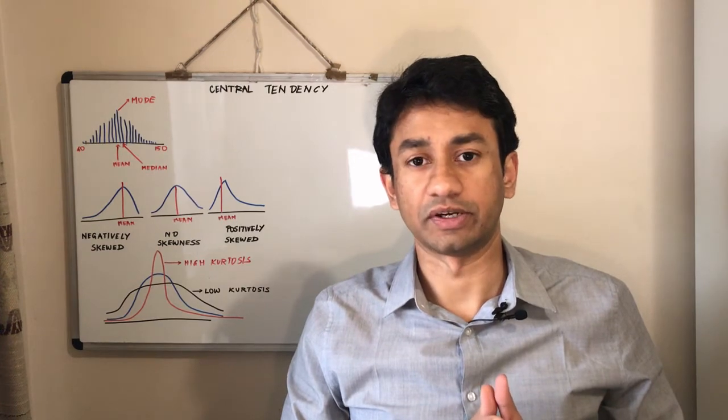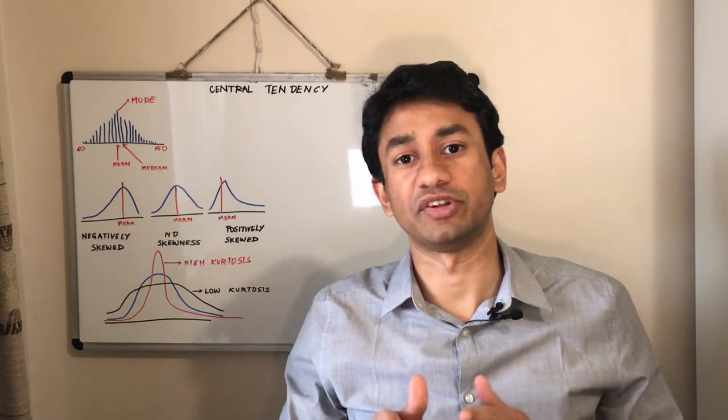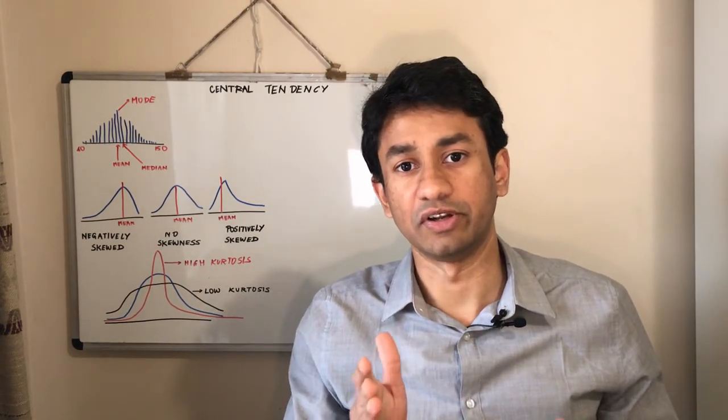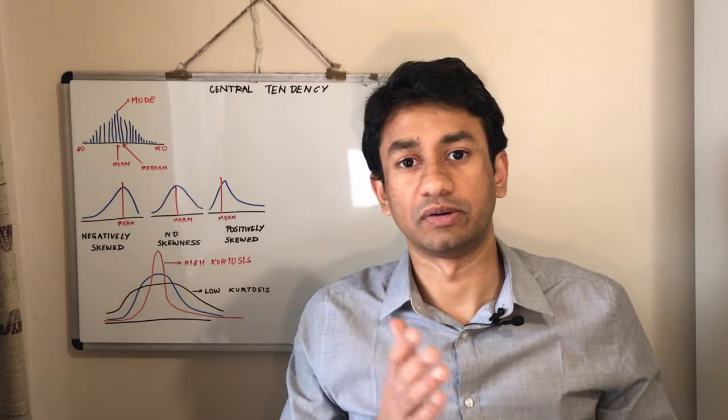The next two important topics are skewness and kurtosis. Skewness is used to measure whether the distribution of the data set is normally distributed or is it leaning towards one side of the curve. For example, when it is leaning towards the right we call it negatively skewed, as you can see on the board. When it is negatively skewed, the mean and median will be shifted towards the right-hand side. In case of a positively skewed data set, the mean and median would be shifted towards the left-hand side of the curve.